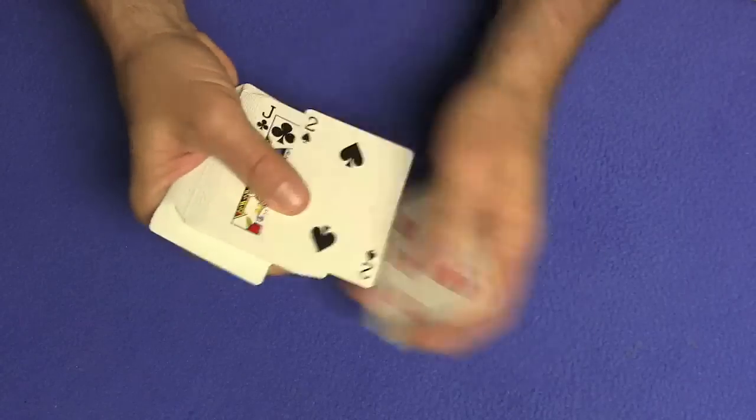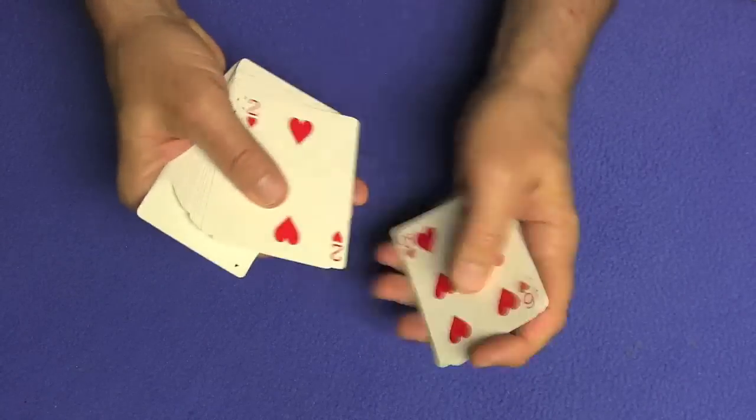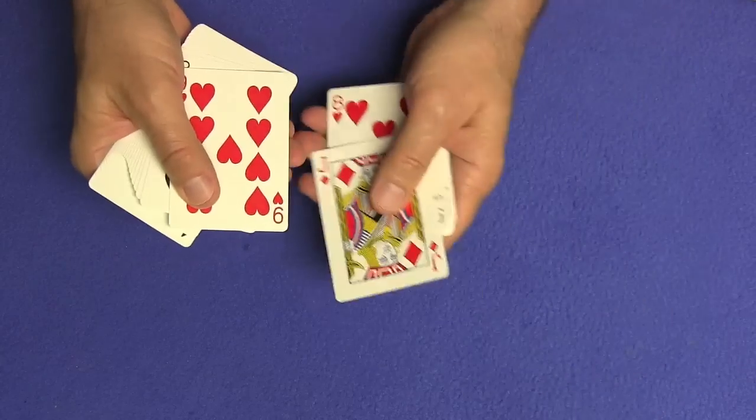So you're going to count one, two, three, four, five, six, seven, eight, nine, ten, eleven, twelve, thirteen, fourteen, fifteen, sixteen, seventeen, eighteen, nineteen, twenty, twenty-one, twenty-two, twenty-three, twenty-four, twenty-five, twenty-six, remembering the ten of diamonds.